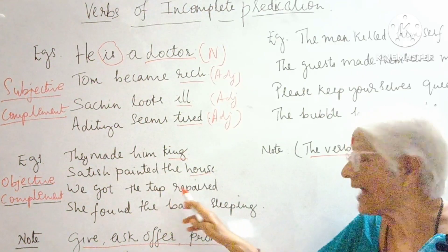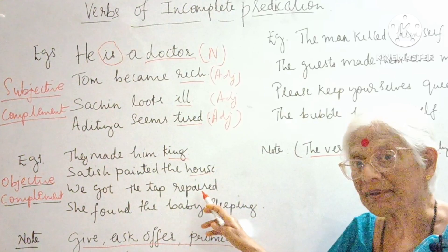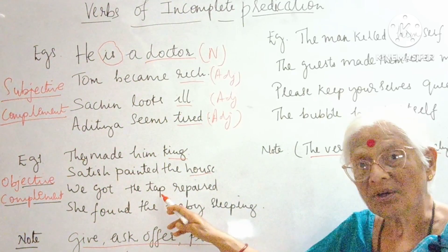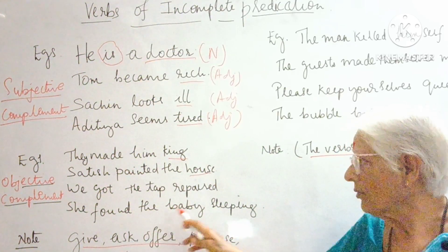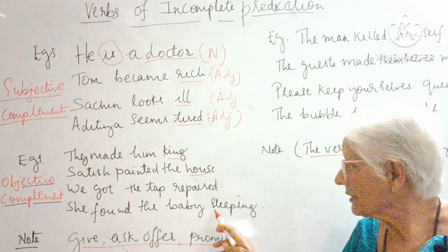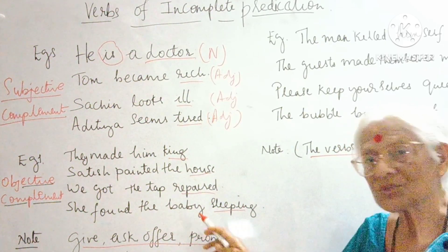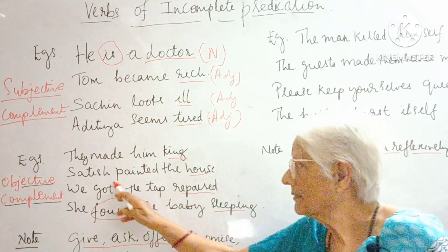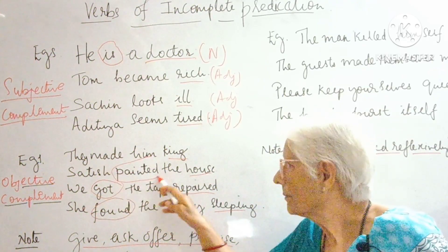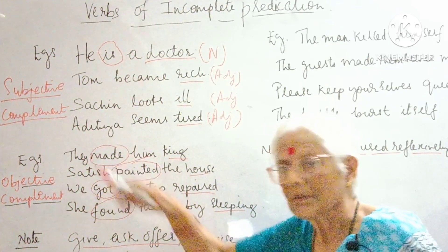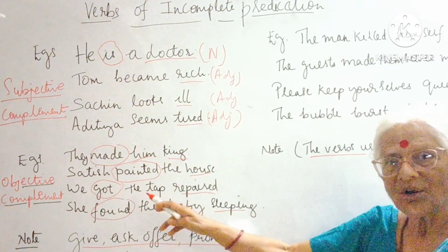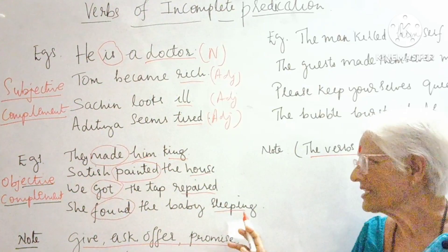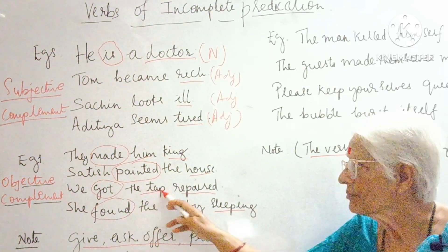'We got the tap repaired' — which tap? The one that was repaired. So 'repaired' is an objective complement that belongs to the object 'tap.' 'She found the baby sleeping' — which baby? The one who was sleeping. So it belongs to the object 'baby.' In these sentences, made, painted, got, and found are incomplete verbs, and the words king, house, repaired, and sleeping all belong to the objects.